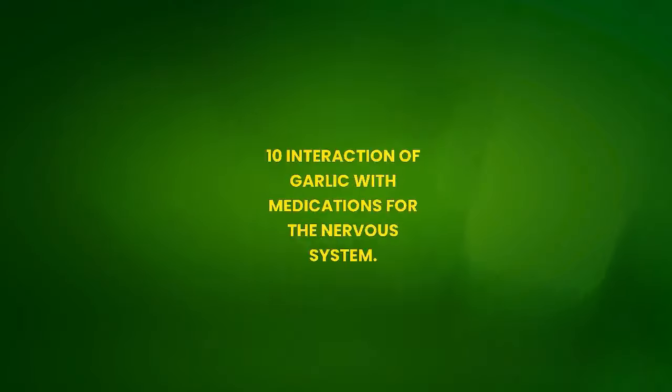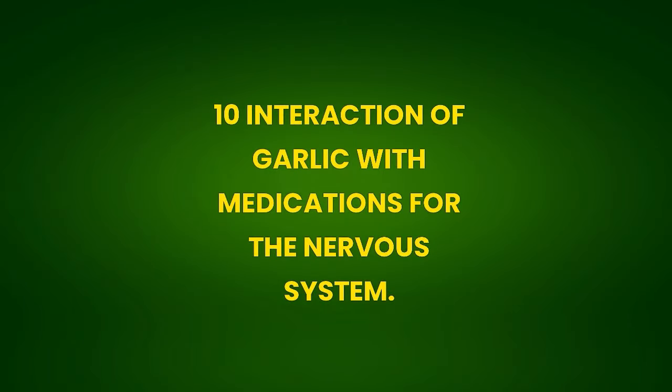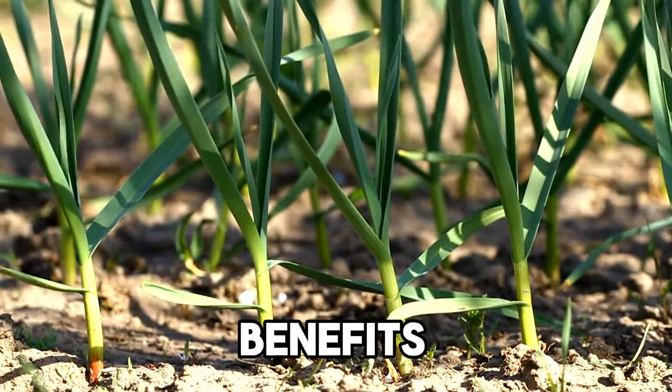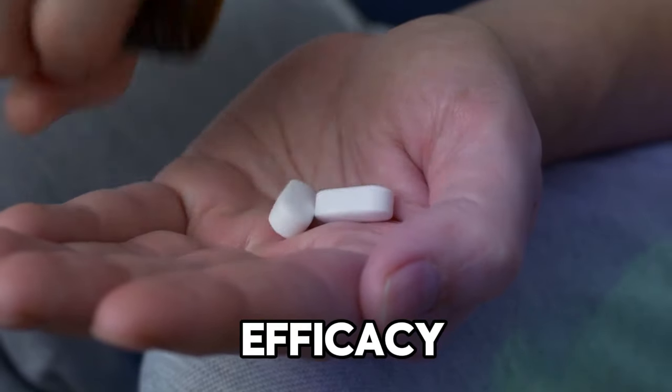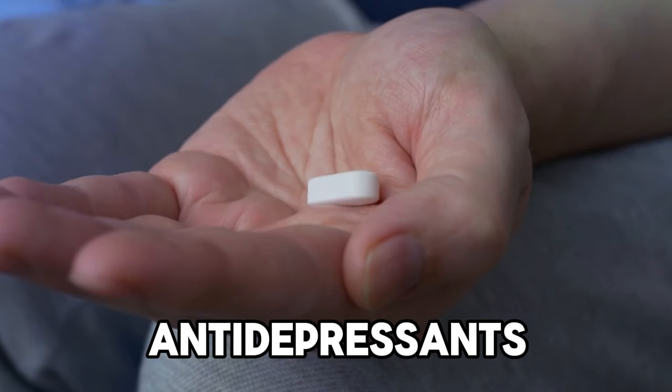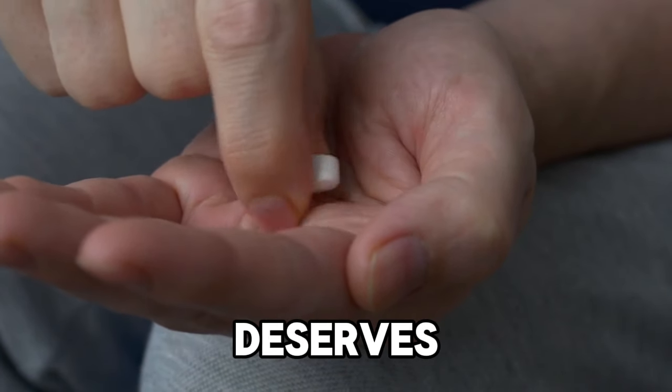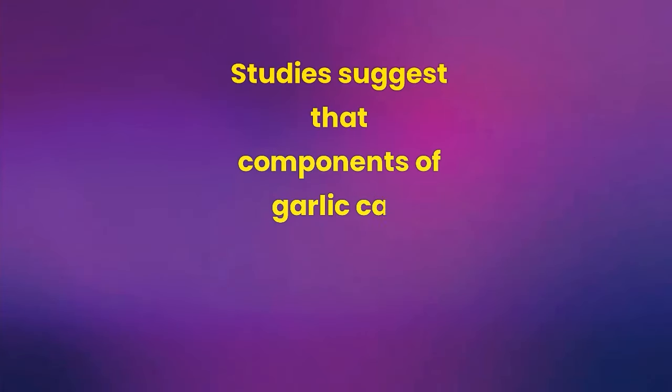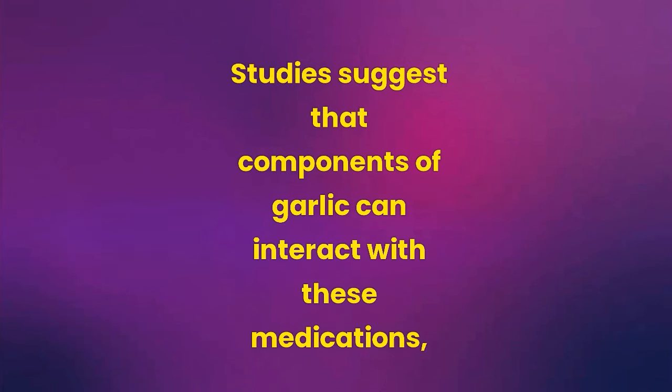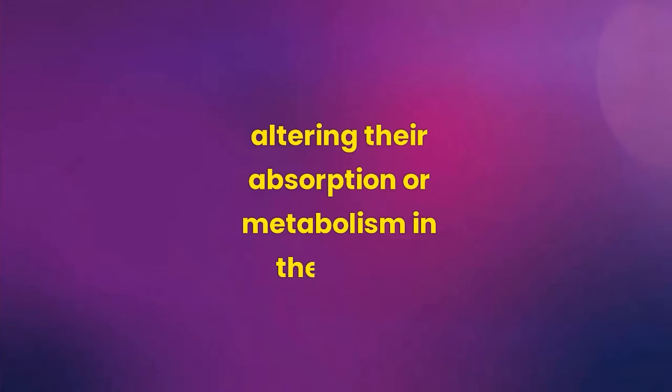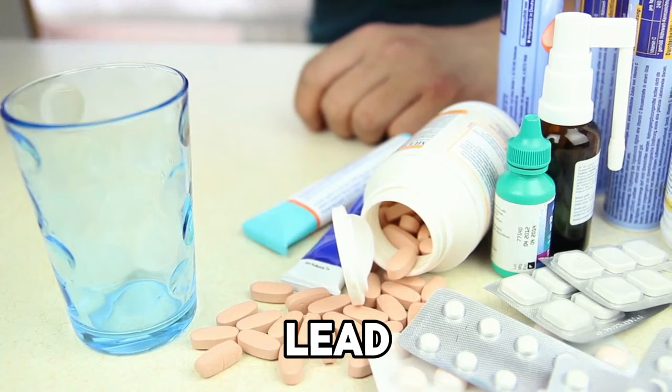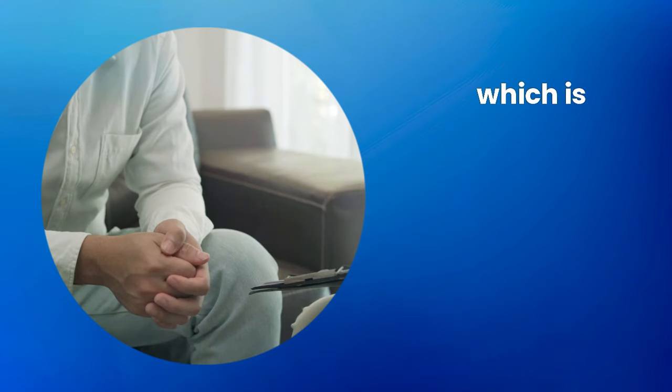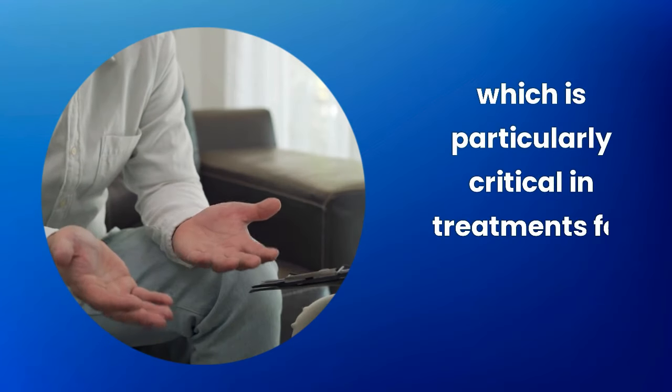10. Interaction of garlic with medications for the nervous system. Garlic is a medicinal plant known for its numerous health benefits. However, its impact on the efficacy of medications for the nervous system, such as antidepressants and anxiolytics, deserves special attention. Studies suggest that components of garlic can interact with these medications, altering their absorption or metabolism in the body. This phenomenon can lead to a reduction or potentiation of the effects of the drugs, which is particularly critical in treatments for psychiatric conditions.